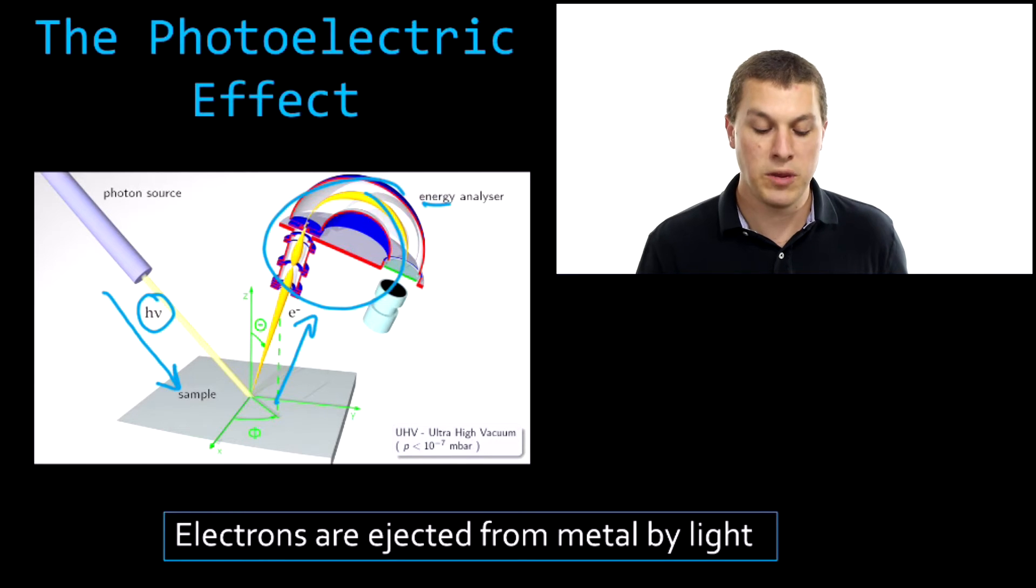And the reason this experiment was so important was because if light was a wave, we should get some very particular results in the setup. And we actually got very different results. And so what I'm going to do now is talk about what we expected and then what we actually saw.